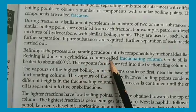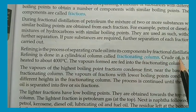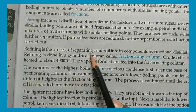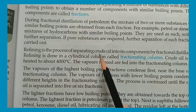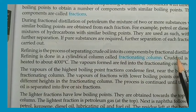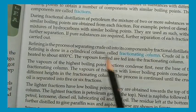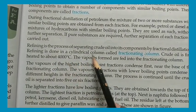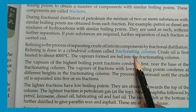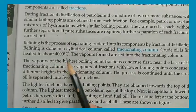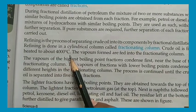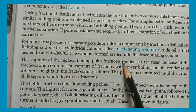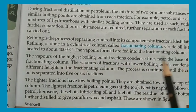Refining is the process of separating crude oil into its components by fractional distillation. Refining is done in a cylindrical fractionating column. Crude oil is first heated to 400 degrees Celsius, and the vapors formed are fed into the fractionating column.